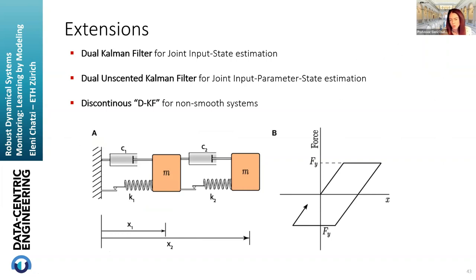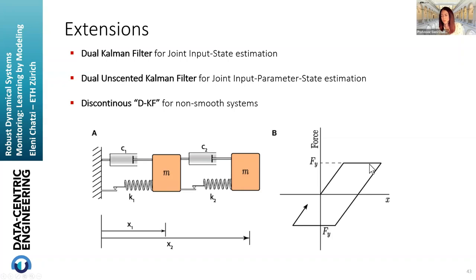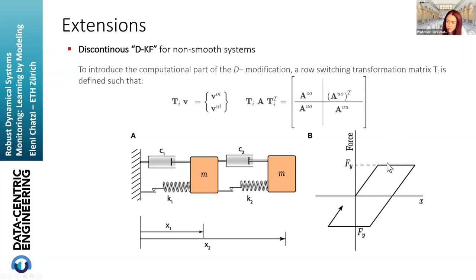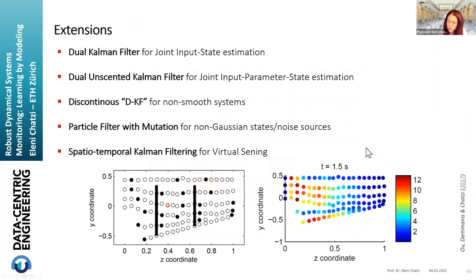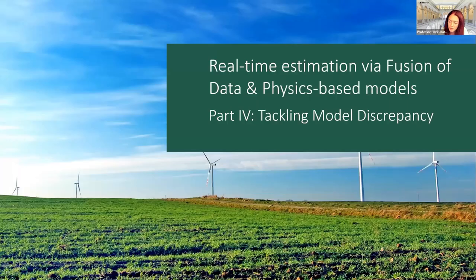This Bayesian filtering approach has been extended to handle non-smooth systems — where the parameter space shifts from linear to nonlinear — addressing observability issues such as elastic parameters being unobservable in a perfectly plastic regime. We have also shown use of these filters for spatial-temporal problems, predicting both in time and space. These extensions are detailed in our relevant literature for those interested.